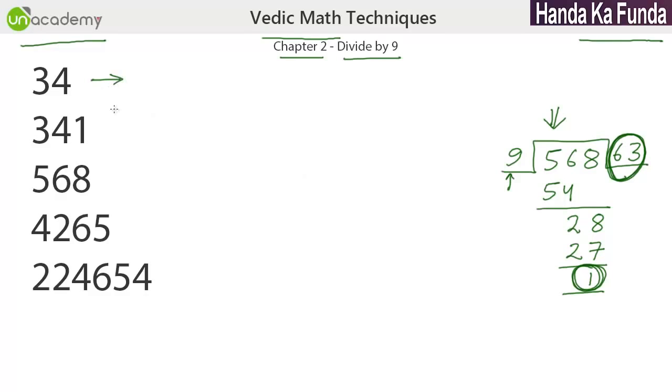Let's see. So, suppose you have to divide 34 by 9. What you do is, you write down whatever is the first digit, that is 3 and then the sum. So, 3 plus 4 is 7. That's it. That's all you need. The quotient is 3 and the remainder is 7.